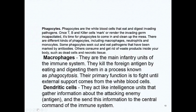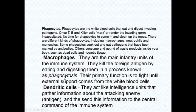Phagocytes are white blood cells that eat and digest invading pathogens. Once T cells and killer cells mark or render the invading germ incapacitated, phagocytes come in and clear up the mess. Different kinds of phagocytes include macrophages, neutrophils, and monocytes. Some phagocytes seek out and eat pathogens that have been marked by your antibodies. Macrophages are the main infantry units of your immune system — they kill foreign antigens by eating them in a process called phagocytosis. Dendritic cells act like intelligence units, gathering information about the attacking antigen and sending it to the central command of the immune system.